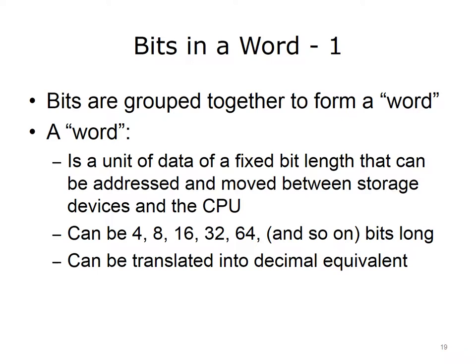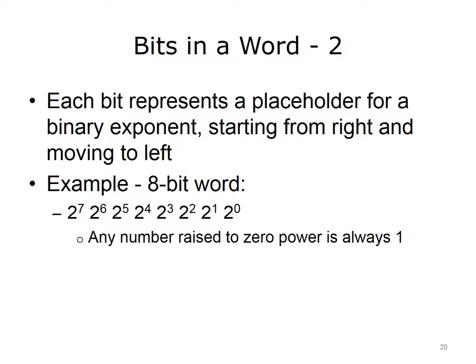Bits are generally grouped together to form what is referred to as a word. A word is a unit of data of a fixed bit length that can be addressed and moved between storage devices and the CPU. A word can be 4, 8, 16, 32, or 64 bits long, or more, following that incremental pattern. Binary words can be translated into decimal equivalents. Each bit in a binary word represents a placeholder for a binary exponent, starting from the right and moving to the left. In an 8-bit word, placeholder values are, starting from the left, 2 to the 7th power, which is 128.